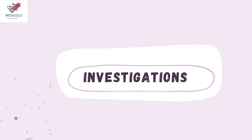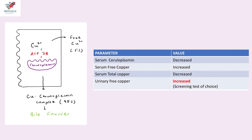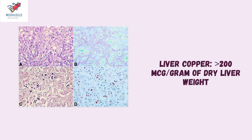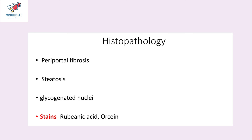Coming to the investigations: serum ceruloplasmin levels decrease, serum total copper levels decrease as the bound copper ceruloplasmin complex levels fall, serum free copper levels increase, and urine free copper levels also increase. Urine free copper is the screening test of choice for this condition. The confirmatory test is liver biopsy — typically liver copper is more than 200 micrograms per gram of dry liver weight, which clinches the diagnosis. Histopathological findings include steatosis, periportal fibrosis, and glycogenated nuclei. Stains used for copper in liver biopsy include rubeanic acid and orcein.